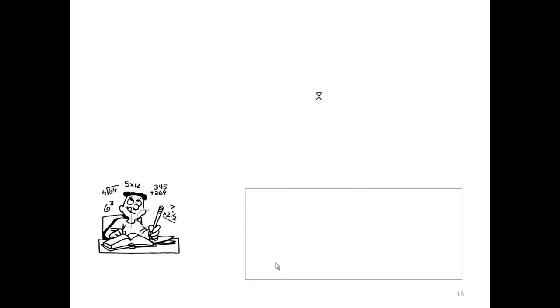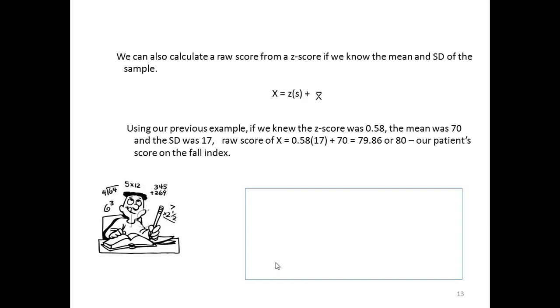We can also go in reverse. We can calculate a raw score from a Z-score if we know the mean and standard deviation of the sample, which we do. Using our previous example, if we knew the Z-score was .58, our mean was 70 and our standard deviation was 17, the raw score of X is calculated as you see here on the screen.